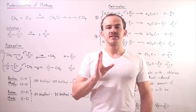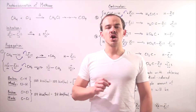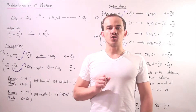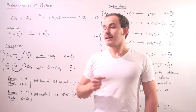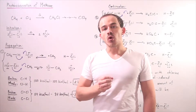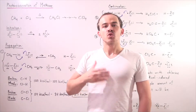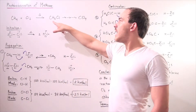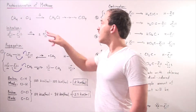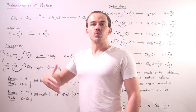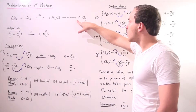Although alkanes are relatively stable and unreactive species, they do undergo certain radical-induced reactions known as photohalogenation. If we take the simplest alkane, methane, and mix it with a chlorine molecule in the presence of an energy source such as light, we will produce methyl chloride. If we have an ample amount of chlorine molecule present and give it some time, we'll eventually produce carbon tetrachloride.